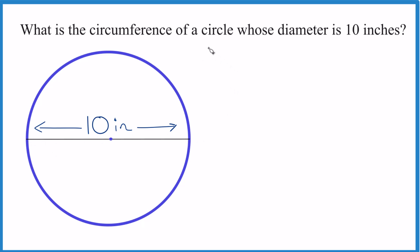So we have a formula for this. Circumference equals pi times d. d is the diameter.